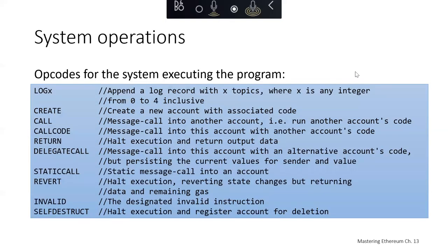From a systems operation perspective, we've got opcodes for the system executing the program. For example, we can append a log record with a certain number of topics, create a new account with associated code, call into another account, call into a particular account with another account's code, halt execution and return output data, delegate a call with an alternative account's code, do a message call into an account under a static message, halt execution reverting state changes but returning data and remaining gas. We have an invalid instruction and a self-destruct instruction which halts execution and registers an account to be deleted.